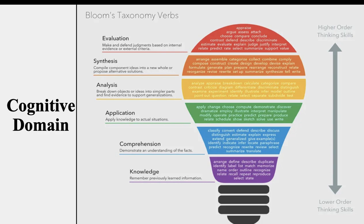The lowest level is knowledge, then comprehension, then application. The higher-order thinking skill levels are analysis, then synthesis, and the highest is evaluation. Evaluation is the most demanding skill — it requires more effort and more time.